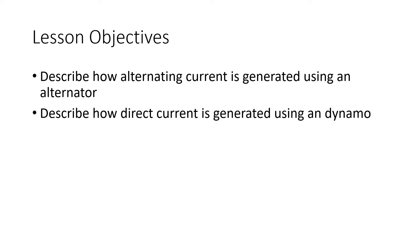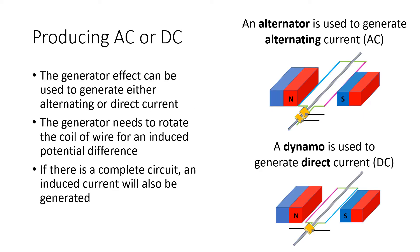In this lesson we're going to look at how alternating current is generated using an alternator, and then how we can generate direct current using the dynamo. When it comes to producing AC alternating current or DC direct current, there are two different machines that can be used, but they all rely on the same concept: we need to get a wire rotating inside a magnetic field.